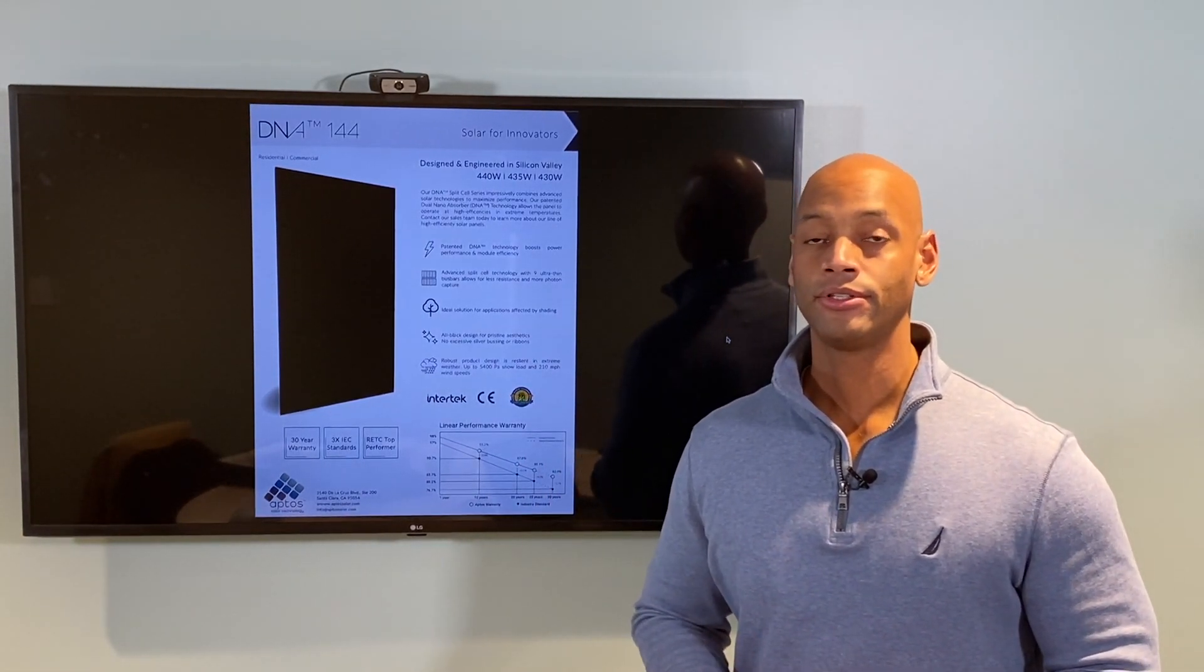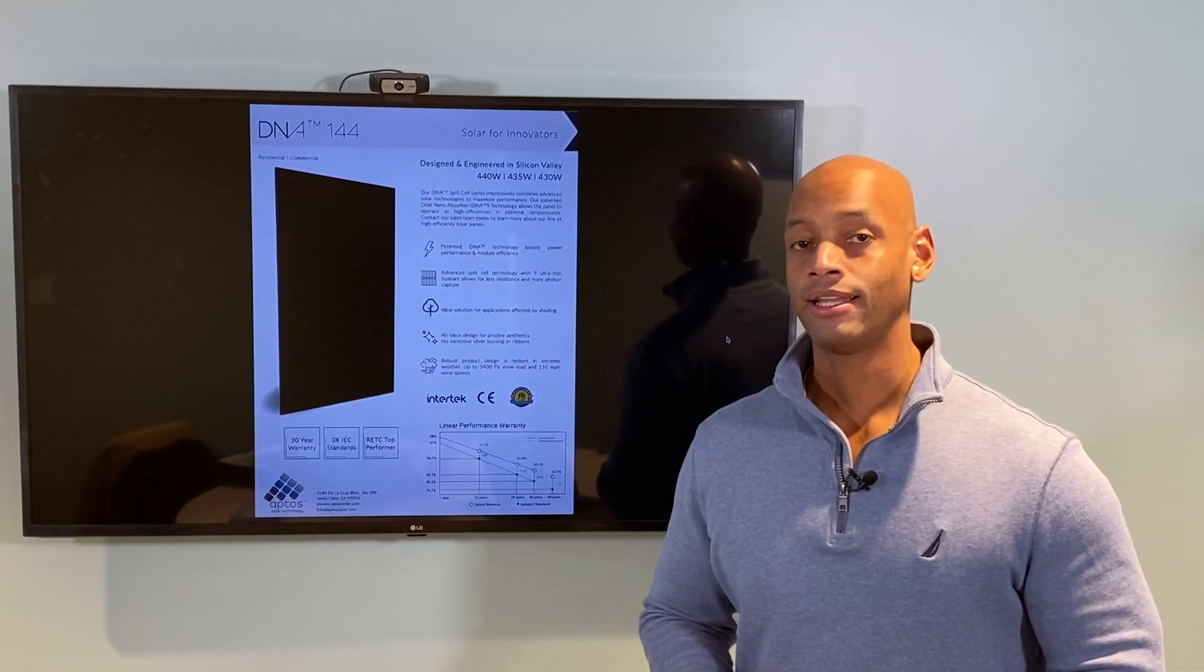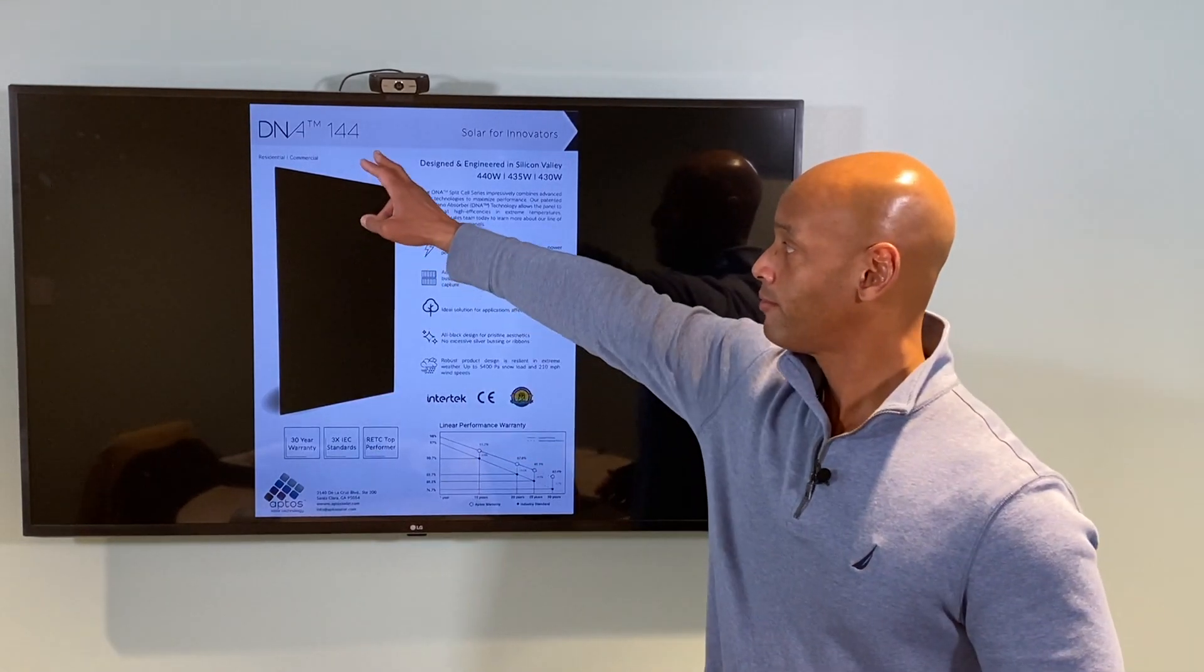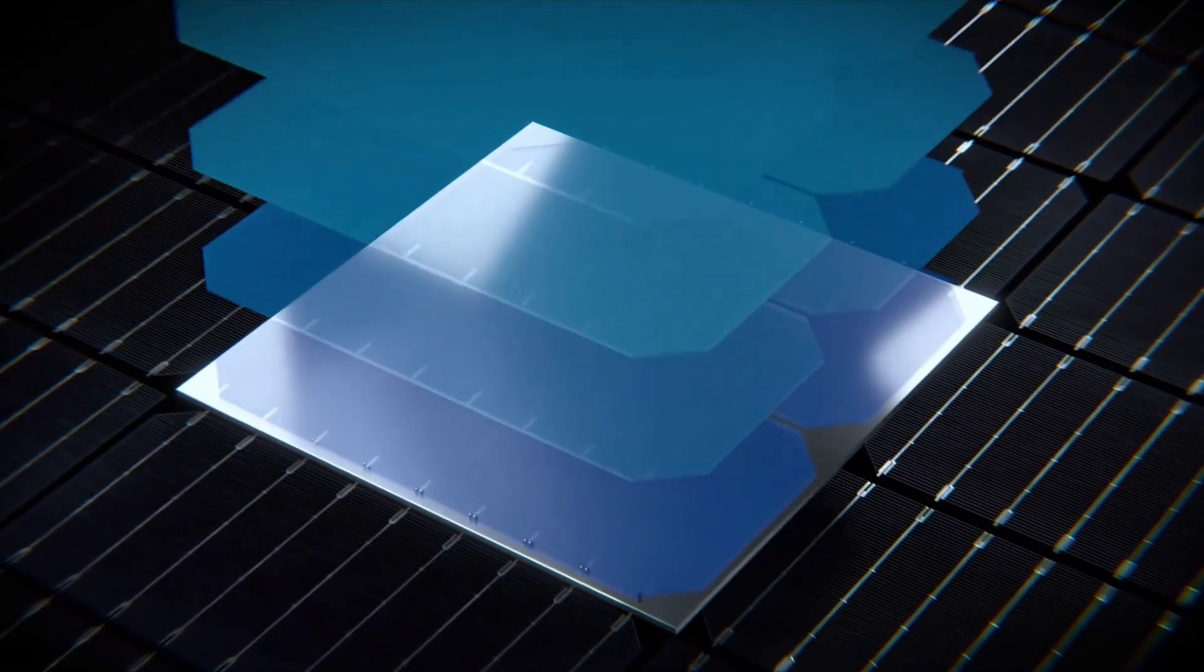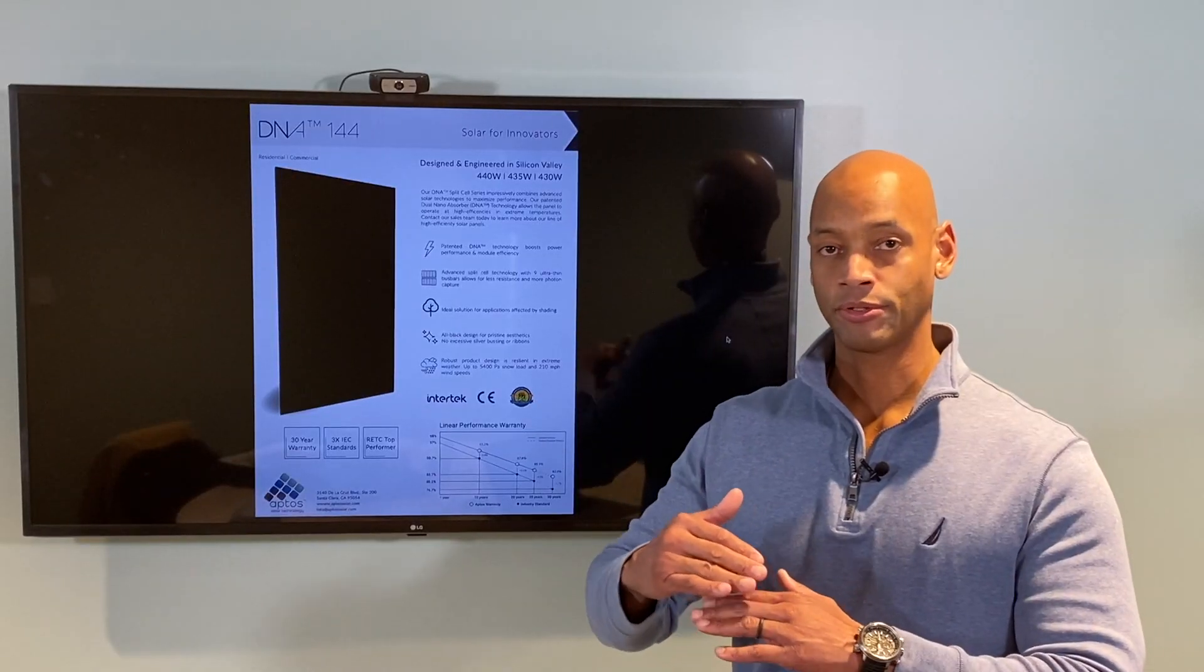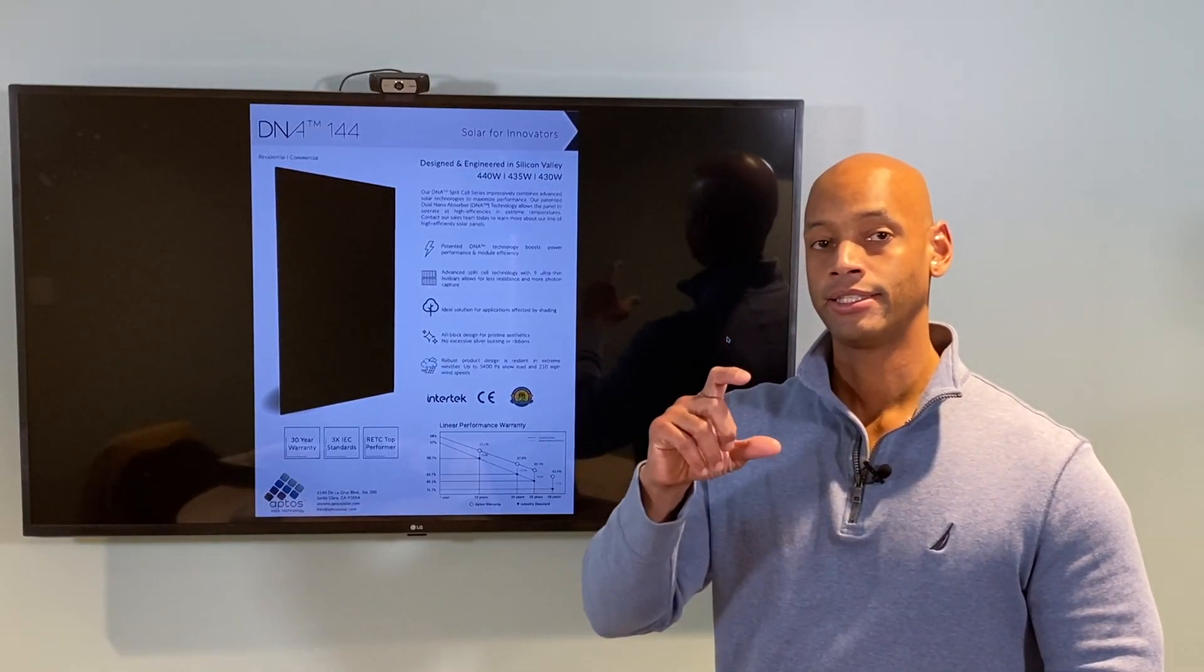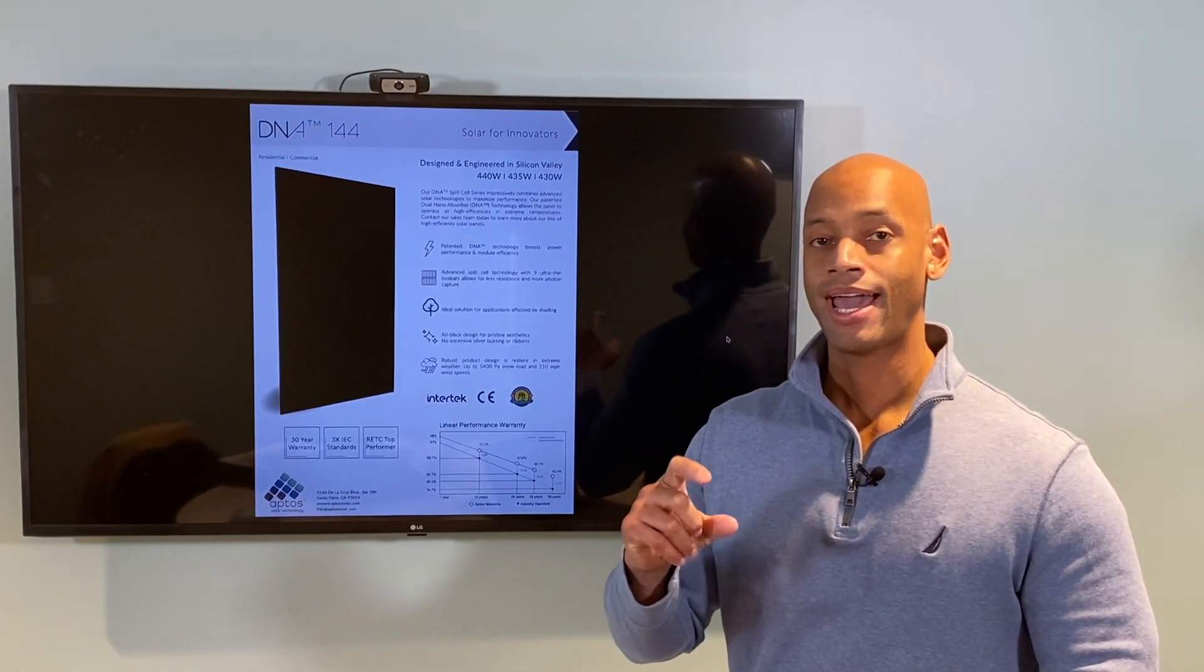Although this is a 72 cell form factor, in reality this is actually a 144 half cell design. So instead of using 72 full cells, the module is actually split into two sections, each section having 72 half cells.